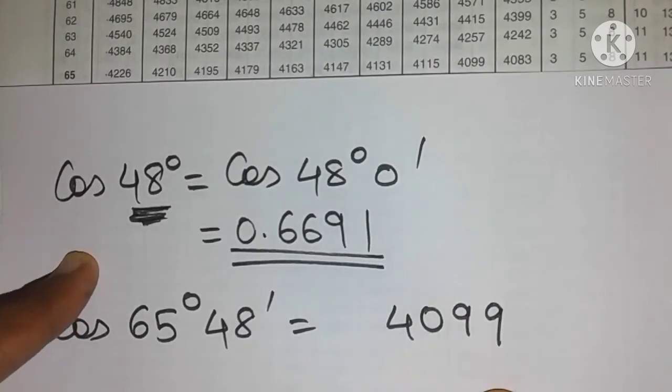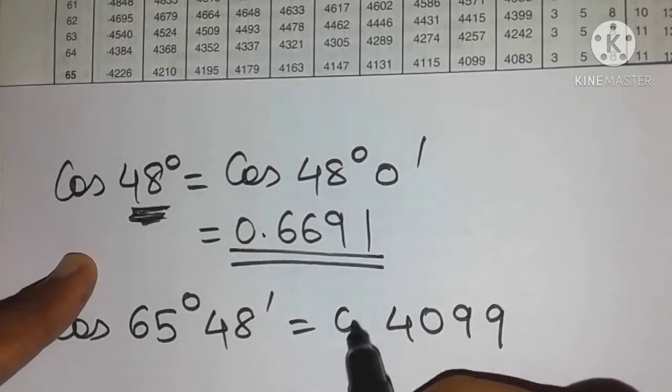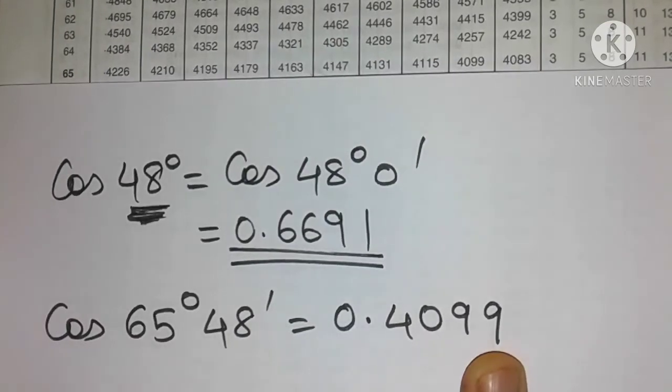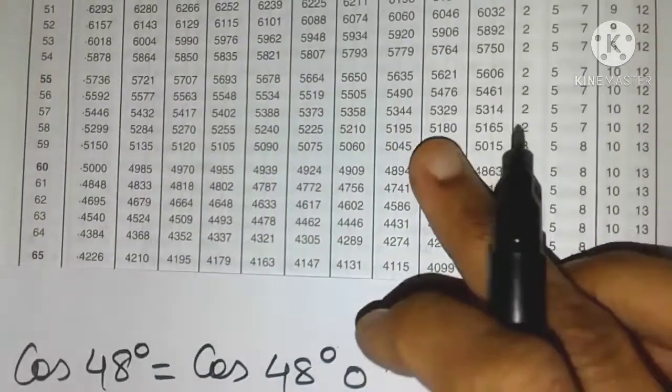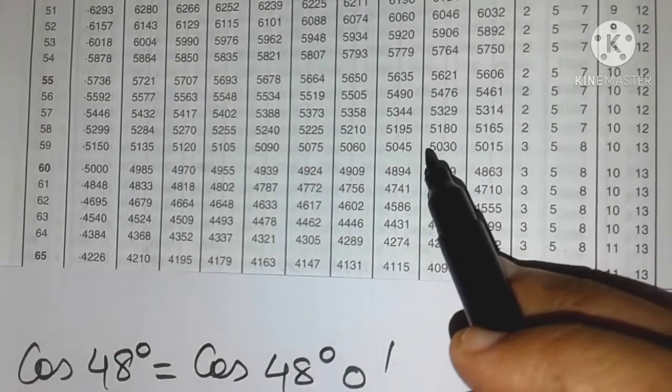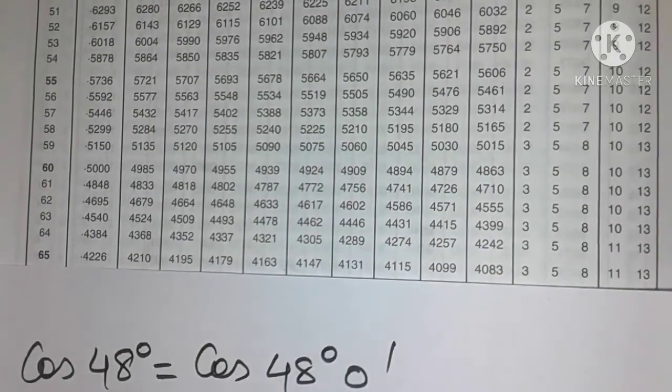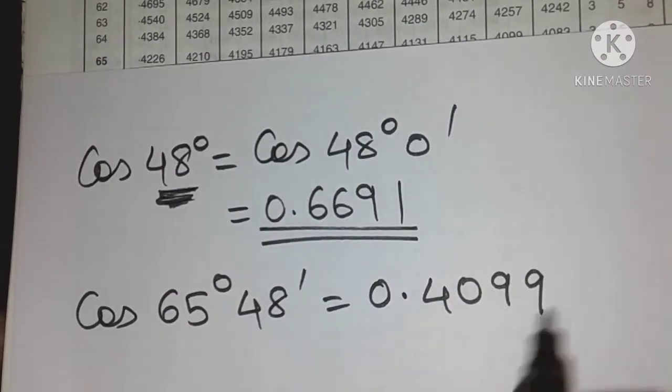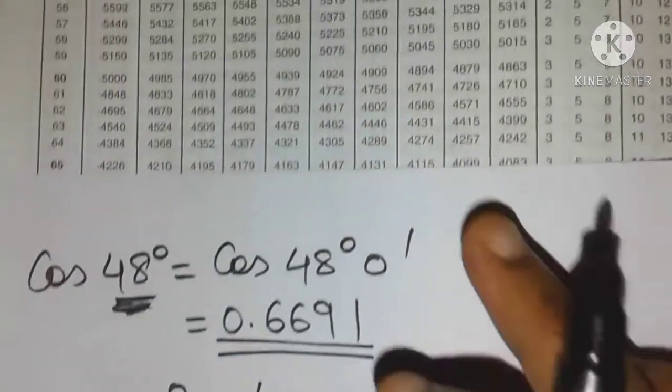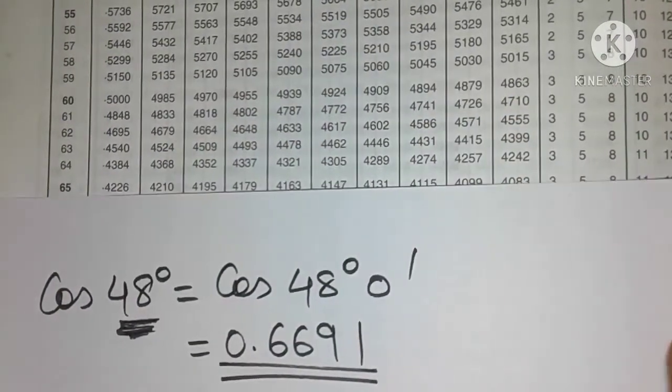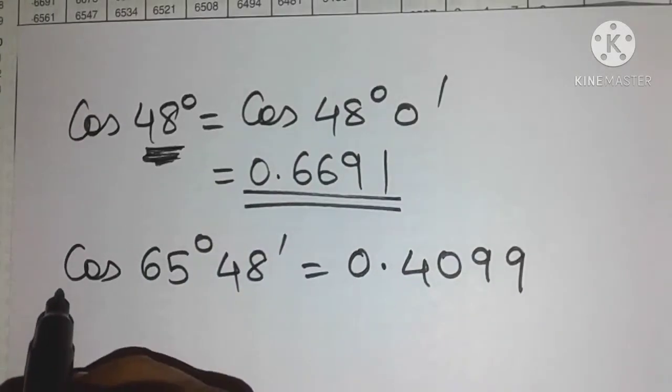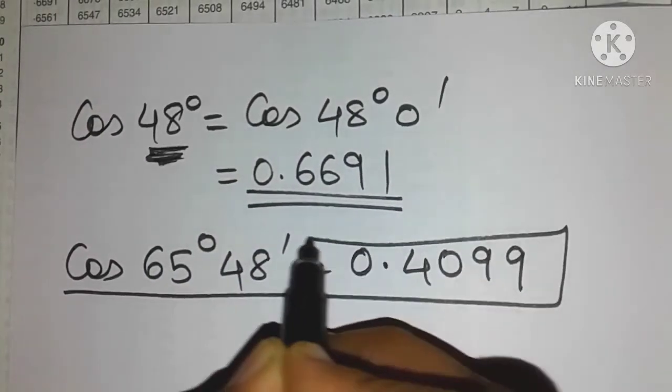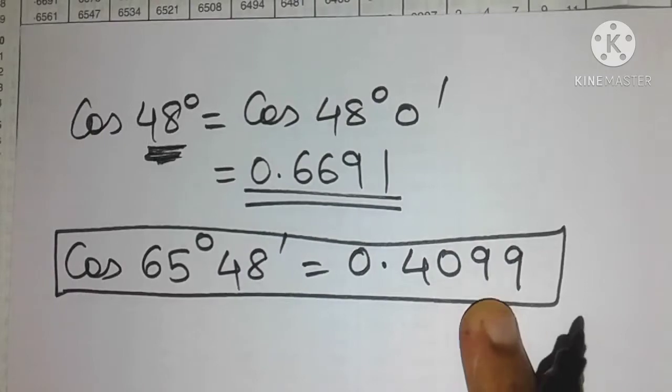Now it's not 4099 friends, it's actually 0.4099. So all these numbers that you see, there is no decimal point written here but it's understood that you have to write 0 point followed by that number. So for all these numbers please follow the same rule. So we found that cos of 65 degrees 48 minutes is 0.4099.